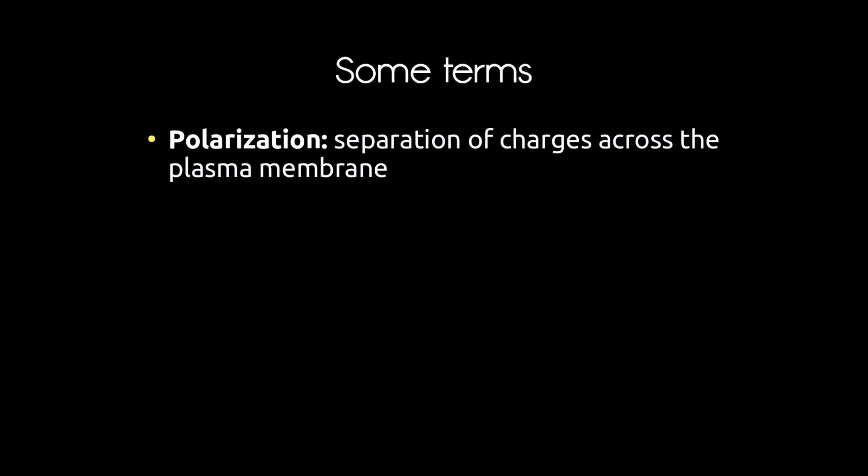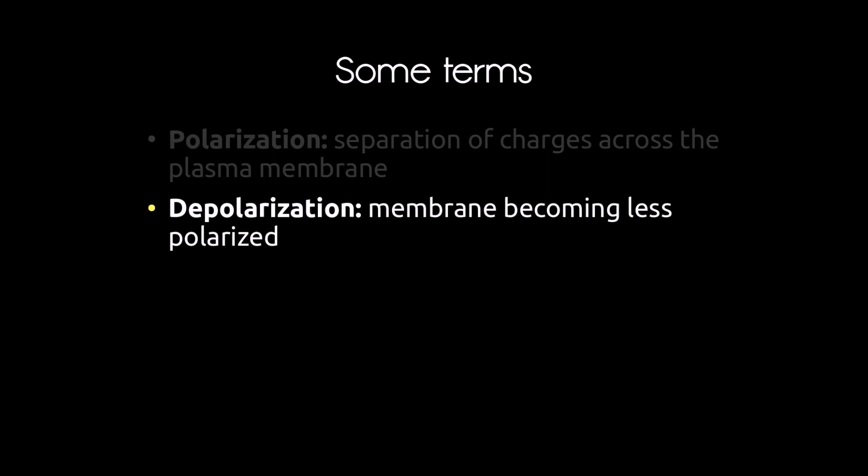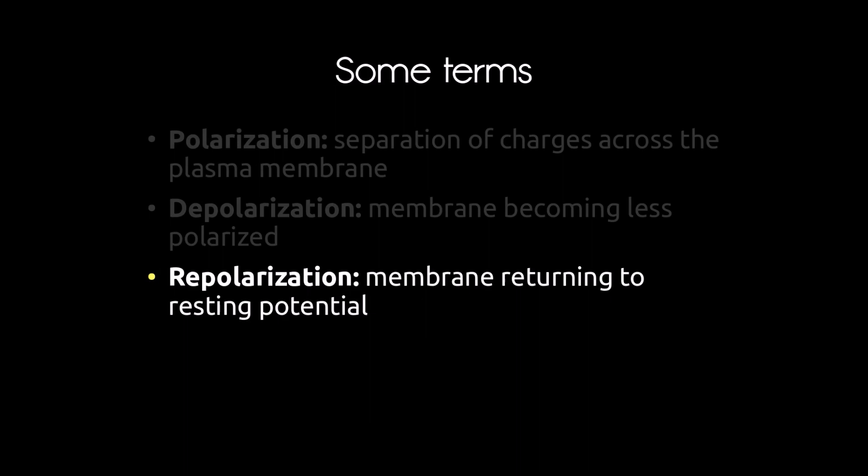Before moving on, let's cover key terminology. Polarization is the separation of charges across a plasma membrane — essentially the same as membrane potential. Depolarization is the membrane becoming less polarized, moving from about negative 70 millivolts toward neutral. Repolarization is the reestablishment of polarization after depolarization — returning the membrane to its resting potential.